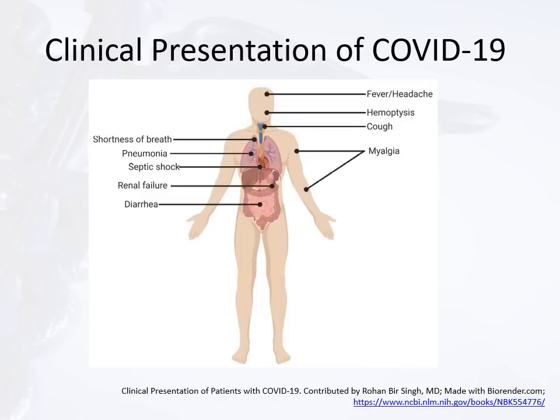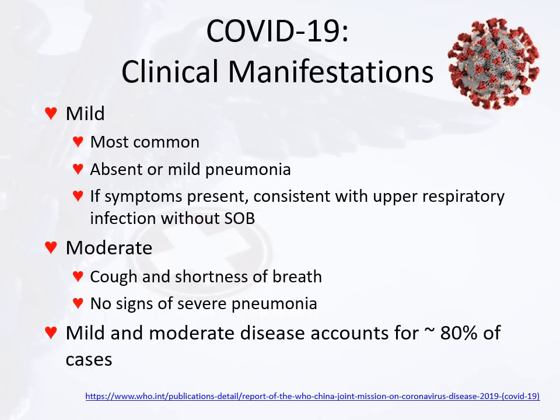The typical clinical presentation of COVID-19 includes fever, headache, hemoptysis (coughing blood), cough, myalgias, diarrhea, renal failure, and septic shock. The focus here is on pneumonia, which leads to dyspnea or shortness of breath. Most people will have mild manifestations — absent to mild pneumonia — and don't know they have the problem. If symptoms are present, it's consistent with upper respiratory infection, usually without shortness of breath. These individuals are walking among us spreading the virus, which is why we are doing social distancing.